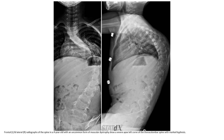Frontal and lateral radiograph of the spine in a four-year-old with an unknown form of muscular dystrophy, showing severe left curvature of the thoracolumbar spine with mild kyphosis.